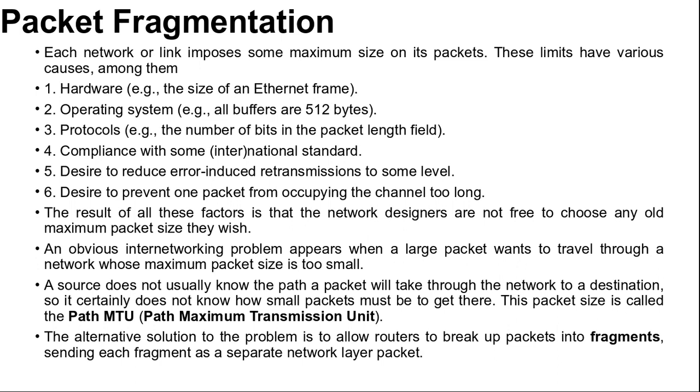This nuisance has been a persistent issue and solutions to it have evolved with experience gained on the internet. One solution is to make sure the problem does not occur in the first place. However, this is easier said than done. A source does not usually know the path a packet will take through the network to a destination, so it certainly does not know how small packets must be to get there. This packet size is called the path MTU, path maximum transmission unit.